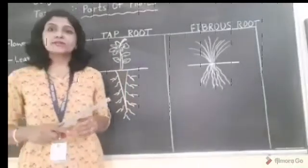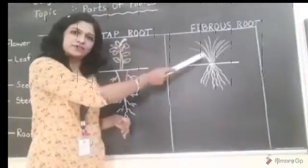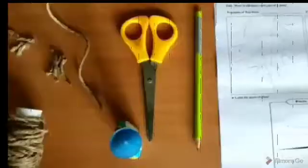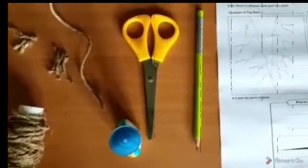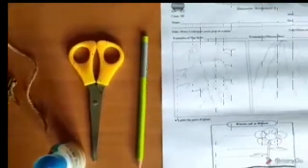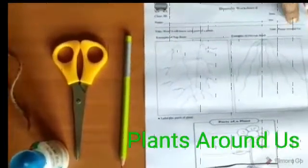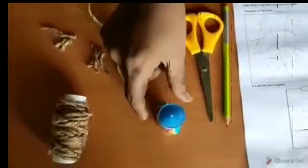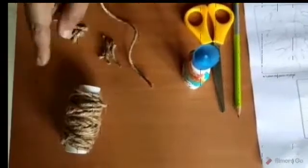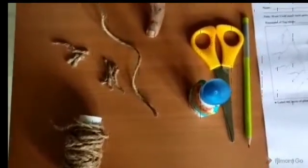Now children, let's move towards today's activity which is based on taproot and fibrous root. Now children, let's start today's activity. For this activity, you need discovery worksheet number 4. The unit name is plants around earth. Pencil, scissor, fevicol and jute. Small pieces of jute. Children, if you don't get jute, you can find another option for that like cotton. Got it?